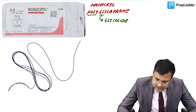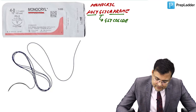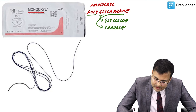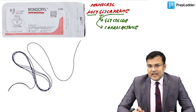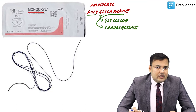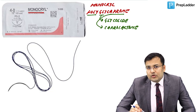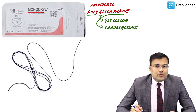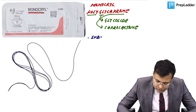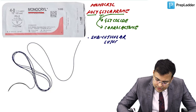Monocryl is used for subcuticular suturing and is absorbed in 90 to 120 days. Next is polyglycolic acid, also known as dexin. It is a polymer of polyglycolic acid and a polyfilament suture, which means there is an increased risk of infection.